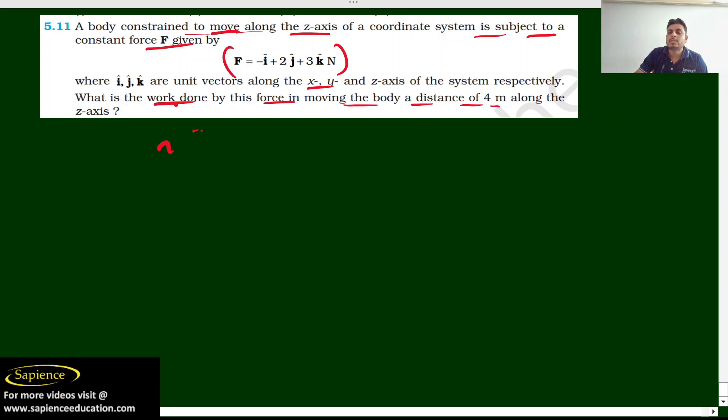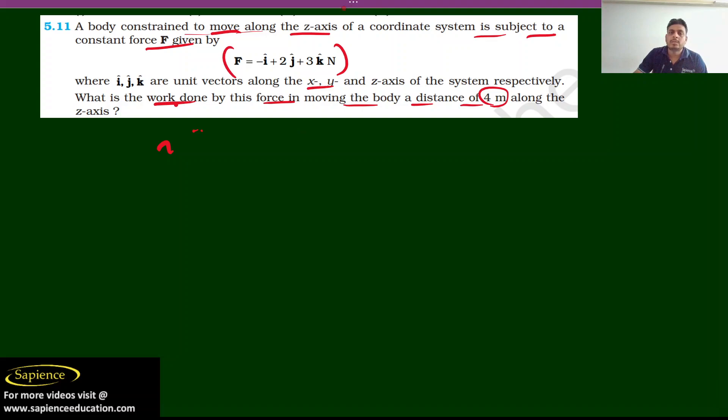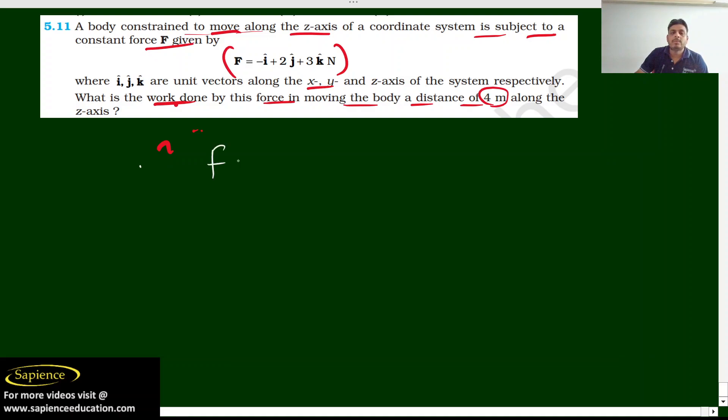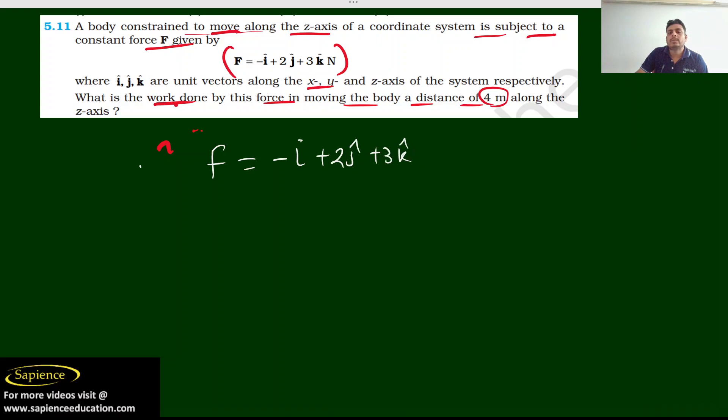a distance of 4 meters along the z-axis. So first of all we need to write what is the force and what is the displacement. What is our force? Force is equal to minus i plus 2j plus 3k newton.